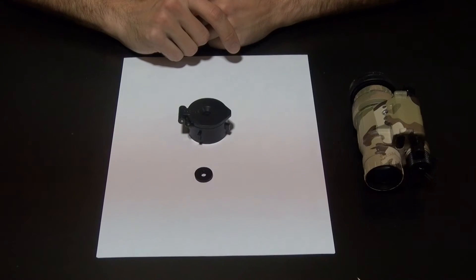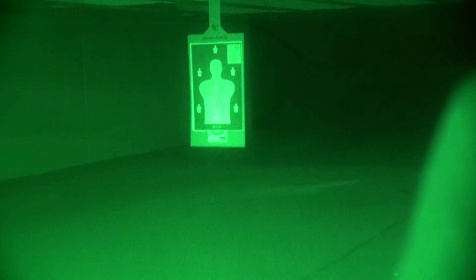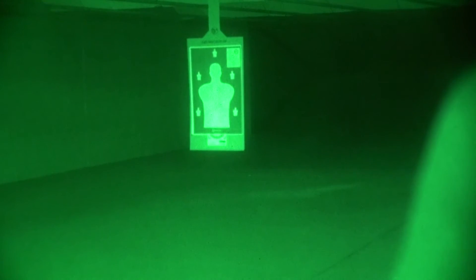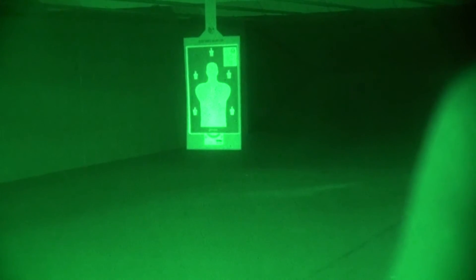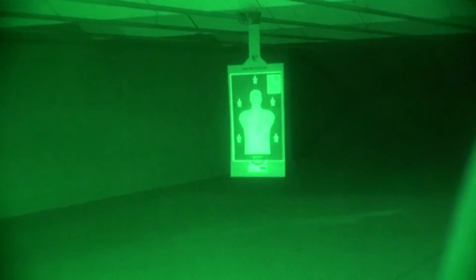Let's see how this works. Here we see a target downrange with the PVS-14 set to infinity focus. The Hoplite is on but I don't have the aperture engaged, so the target is focused but Eric standing in front of me is quite out of focus.